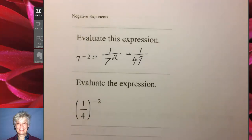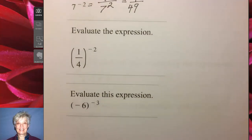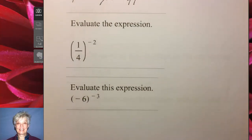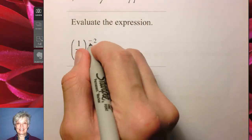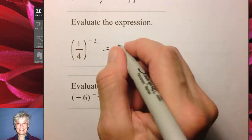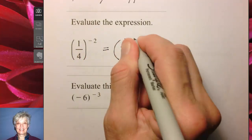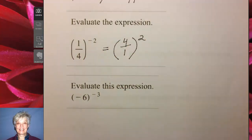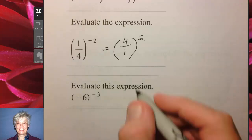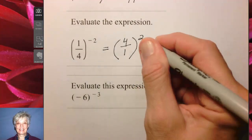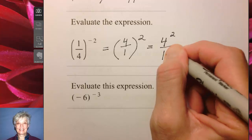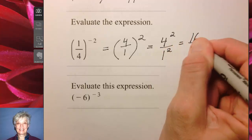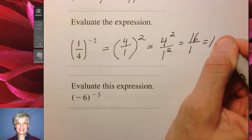We can evaluate the expression 1 fourth to the negative 2 power. We can do this in two steps. First, use the negative sign — the negative sign flips the fraction, leaving a positive 2. You already know how to handle a fraction raised to a power: you raise the numerator and the denominator to that power, which gives 16 over 1, which is 16.